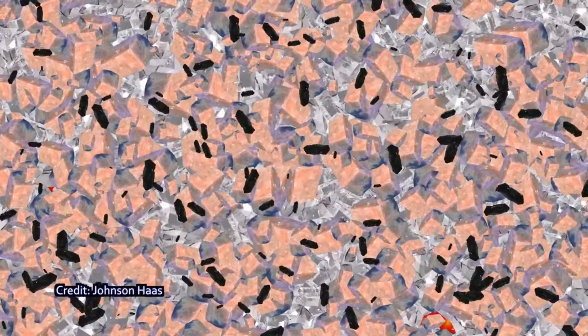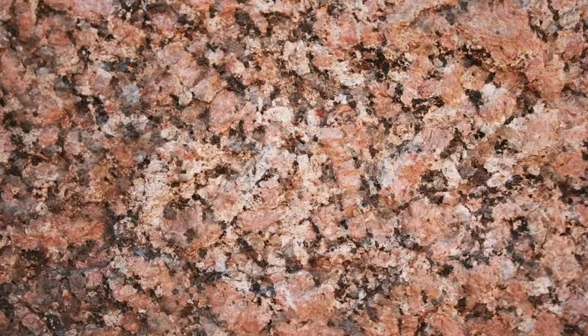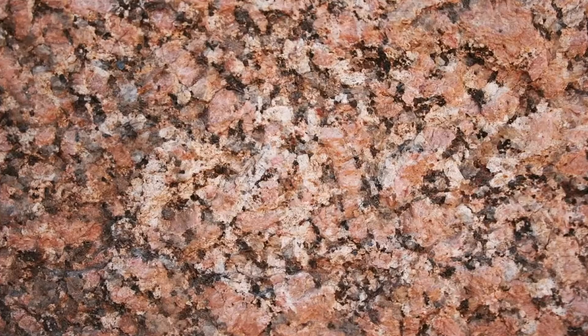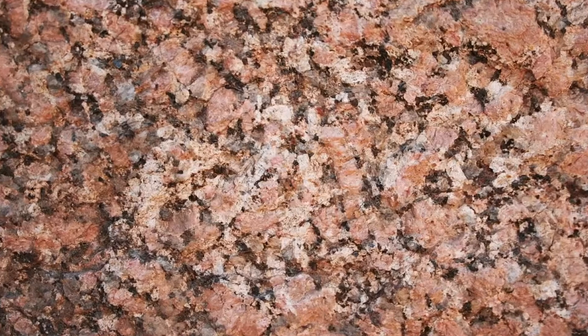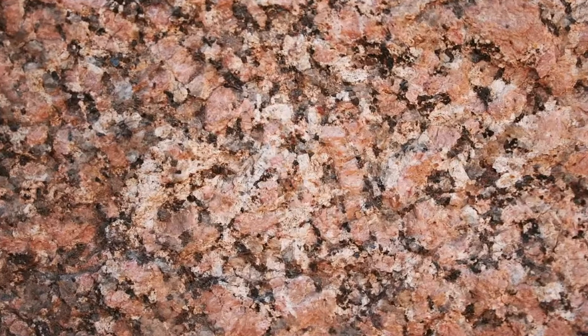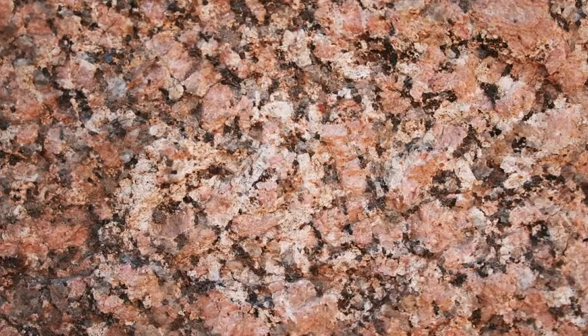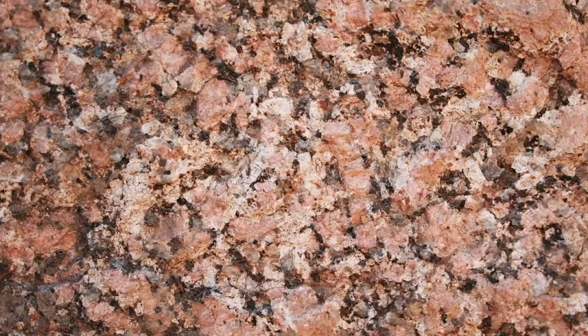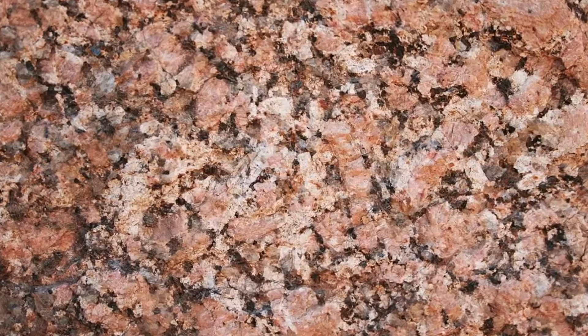Minerals with the highest melting point form first and crystallize out of the melt. As the composition of the remaining melt changes, atoms that slot easily into crystal structures are removed first. Usually it is the bigger, more unusual atoms that are left behind in the late-stage magma.